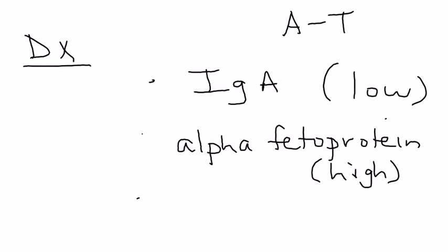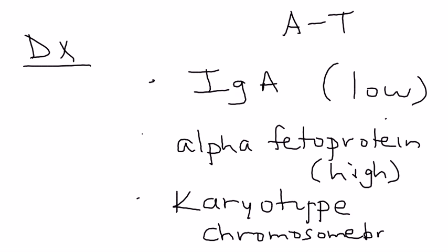And then another thing you can test is a karyotype. What this shows is actually very interesting. It shows that that ATM protein that normally detects DNA damage obviously is not working properly because you will see these chromosomal breaks. And it's very highly specific.